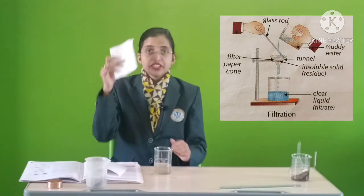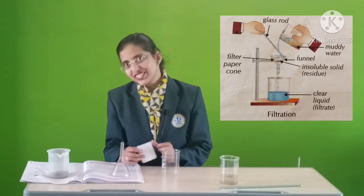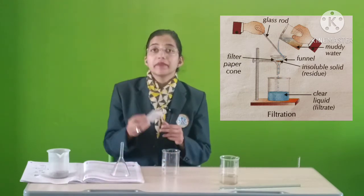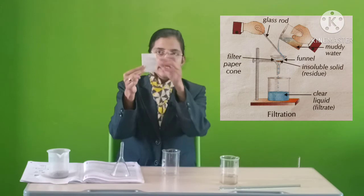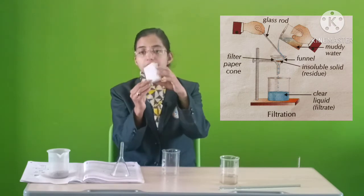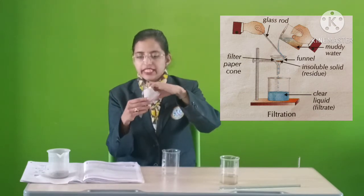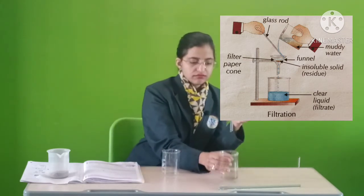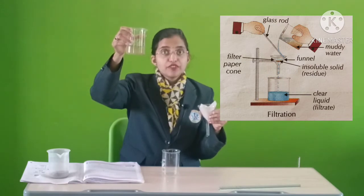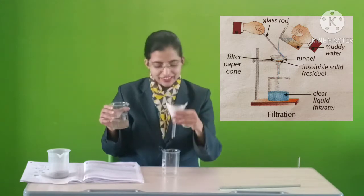The next step is filtration. In filtration we need a filter paper. Now we are ready for filtration. We will make a filter paper cone — this is a filter paper. We fold it like this, and now I am ready with a filter paper cone. I will insert it inside a funnel. I am ready for filtration. This is the water we got after decantation, and now I am starting my filtration.